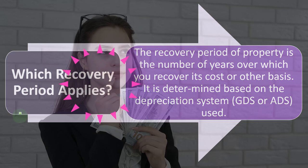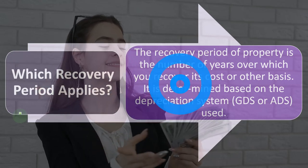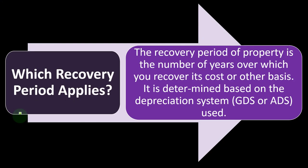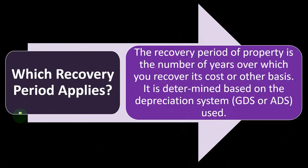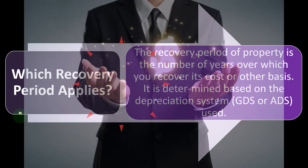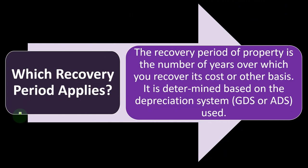Which recovery period applies? The recovery period of property is the number of years over which you recover its cost or other basis. We have to put it on the books as an asset and then allocate the cost over a number of years — a recovery period — getting the benefit over those years. The first way you conceptualize this is usually on a straight-line basis, dividing the cost over the number of years, giving an even amount of expense or deduction over that time frame. We'll deviate from that, possibly going to a double-declining system, which means you get more benefit up front.